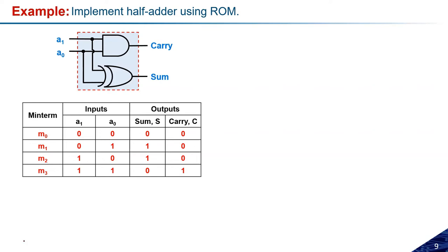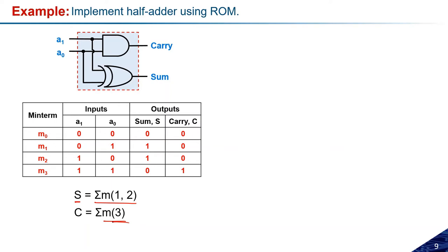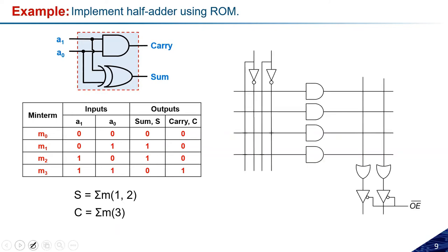The Sum function is the sum of minterms 1 and 2, and Carry is minterm 3. Now, how do we design the half adder using the ROM structure? In any ROM structure there is an AND array and an OR array. The total AND gates required depend on the number of inputs: 2^2 = 4, so four AND gates are needed here.